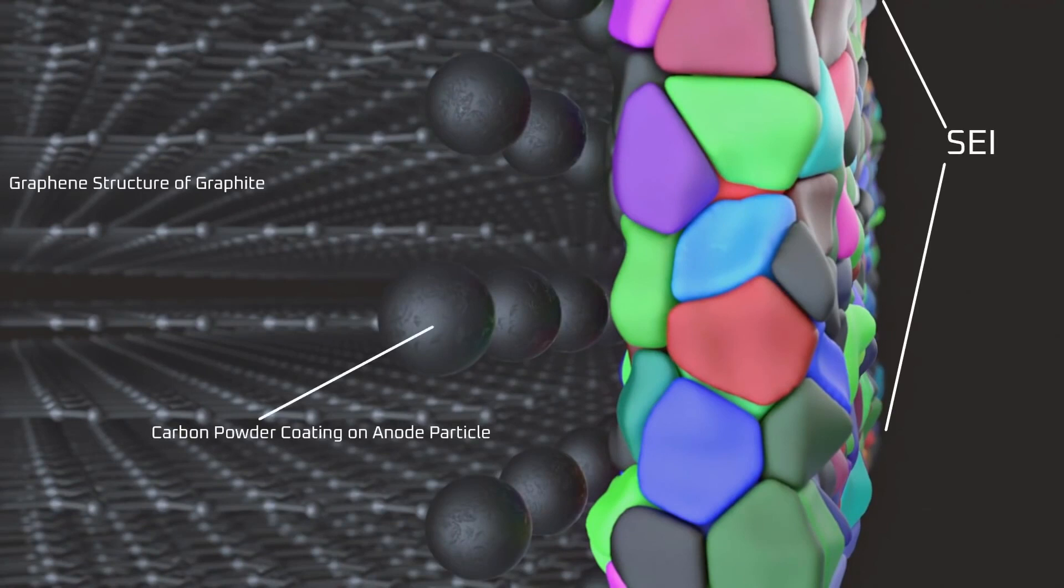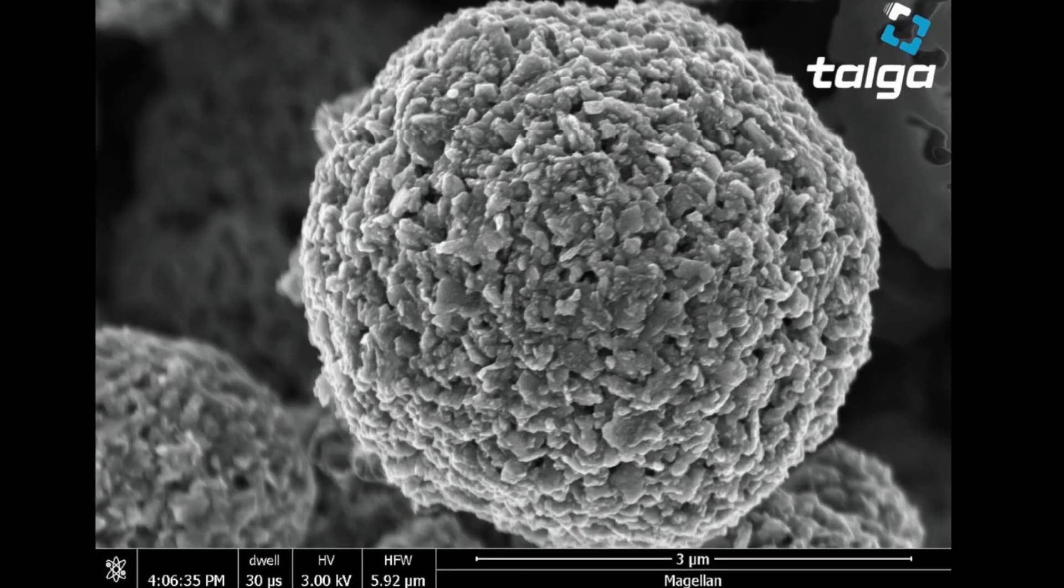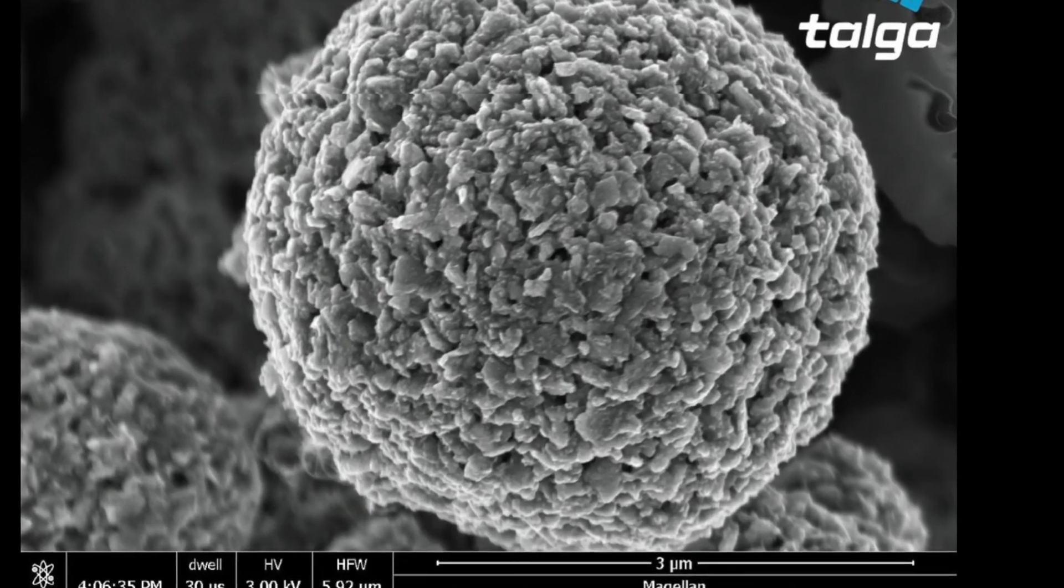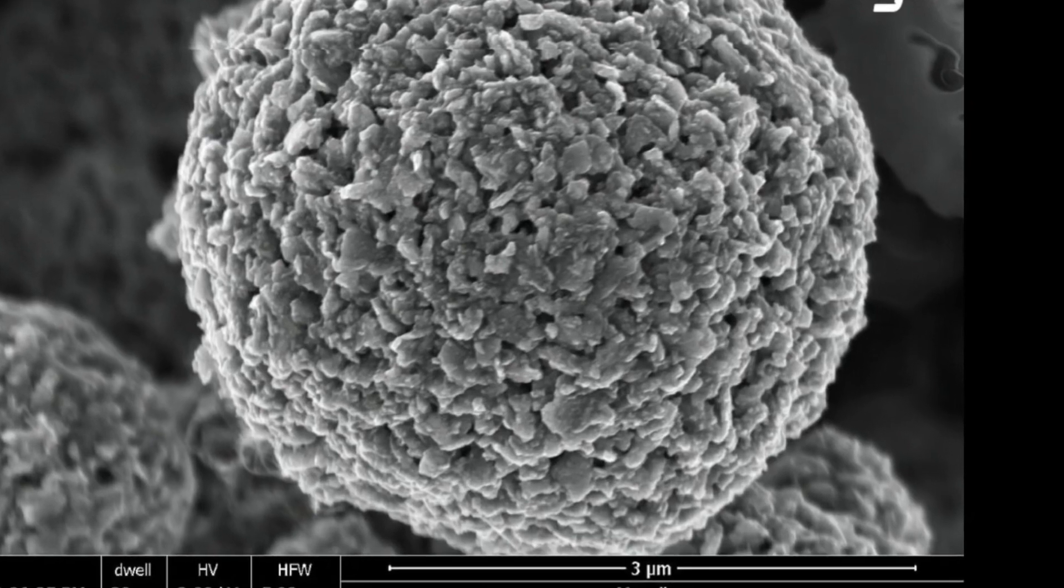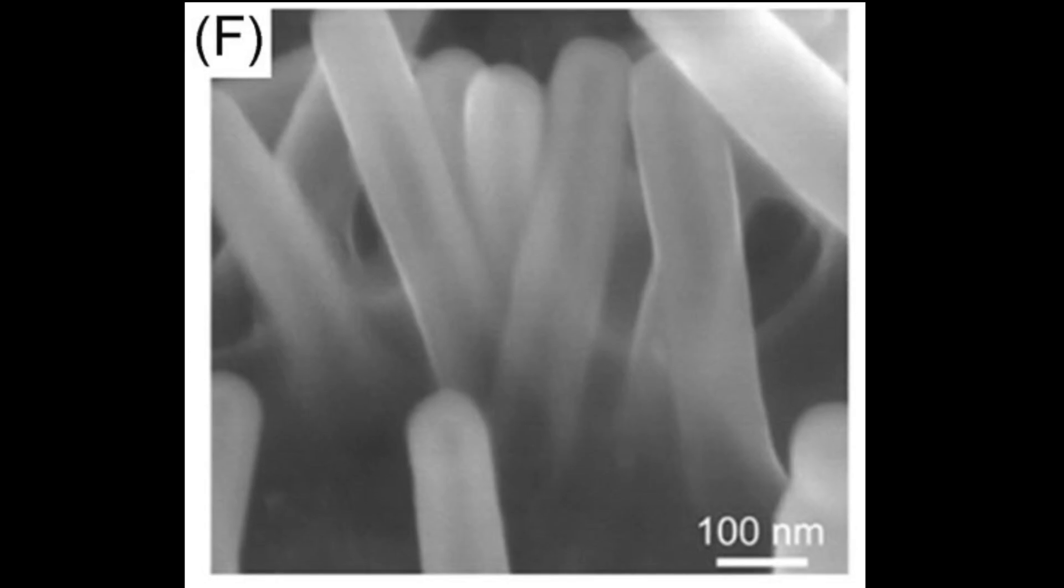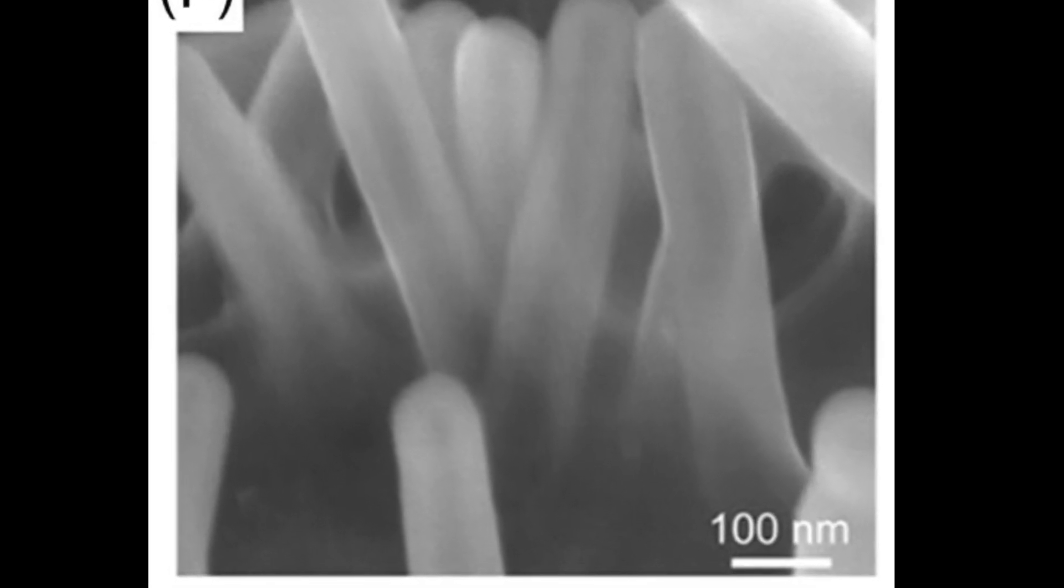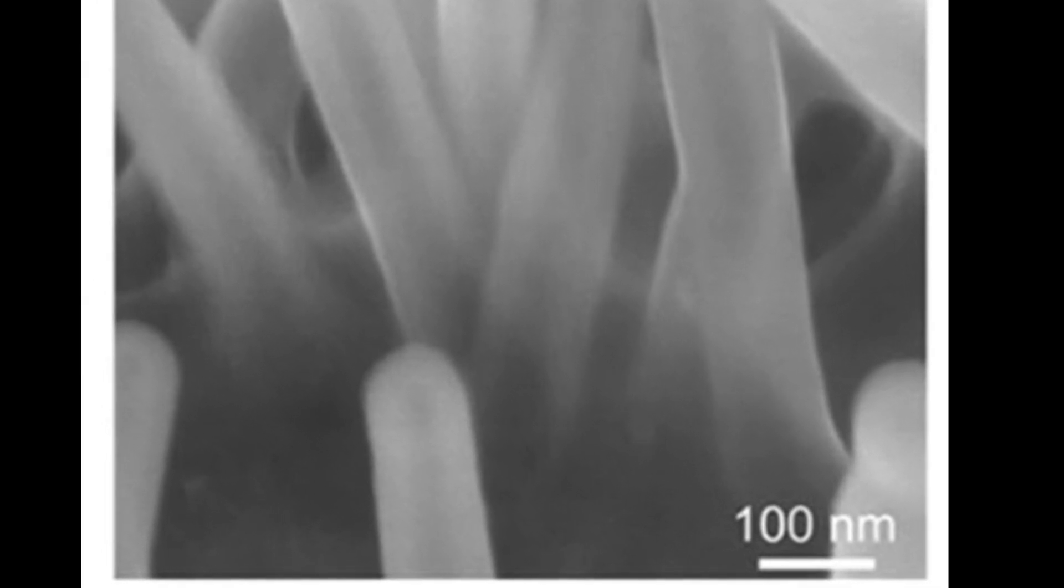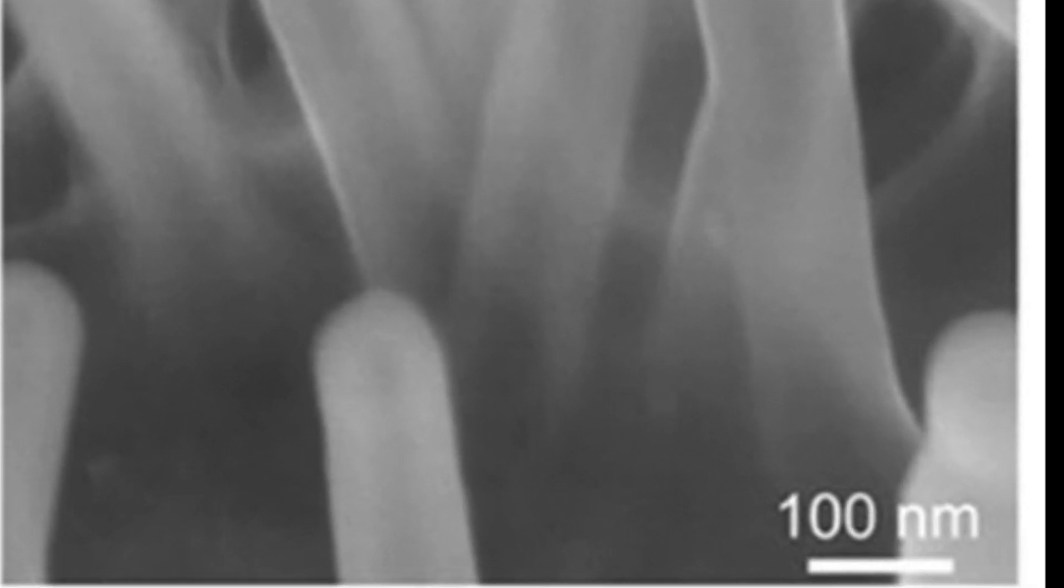To deal with these issues, several strategies have been employed. One is making the silicon particles very small to the nanoscale so that the expansion and contraction issues are reduced. When you make silicon so small, the mechanical properties at this nanoscale behave differently than at the larger micron level.